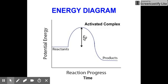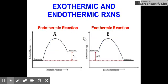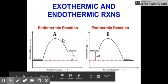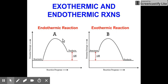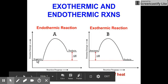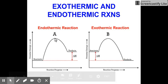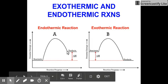Let's further analyze the energy diagrams of the two basic reactions: exothermic and endothermic reactions. For the endothermic reaction — this is your energy-absorbing reaction — you have your reactants' initial energy, and then it goes up to your activated complex, and then the final energy of the products is higher than your reactants.